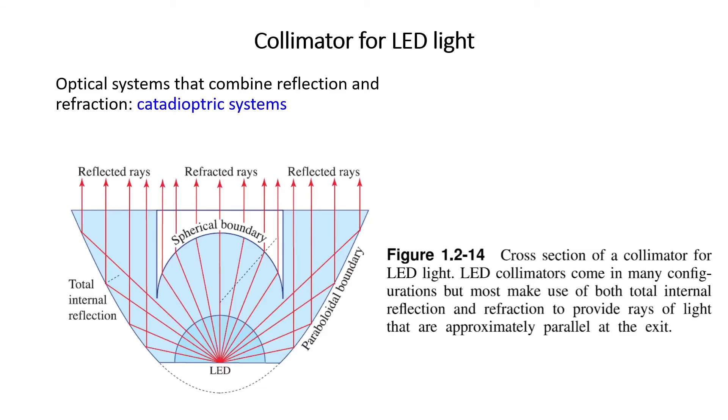Now we want to discuss collimator for LED light. This is an optical system that combines reflection and refraction. So for example, here, see, so for example, here we see an example.